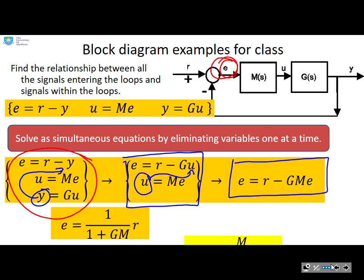Now just for completeness, you can do it. You will find that u equals m over 1 plus gm times r.